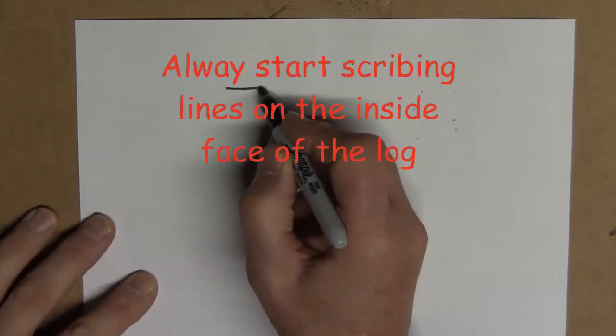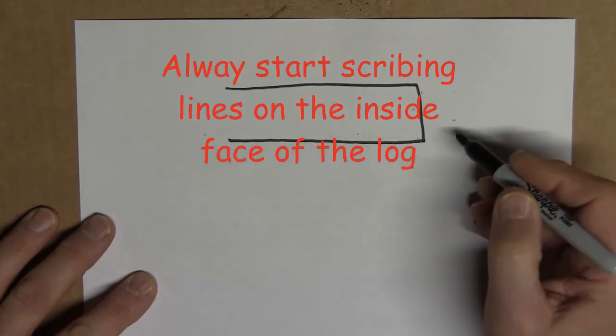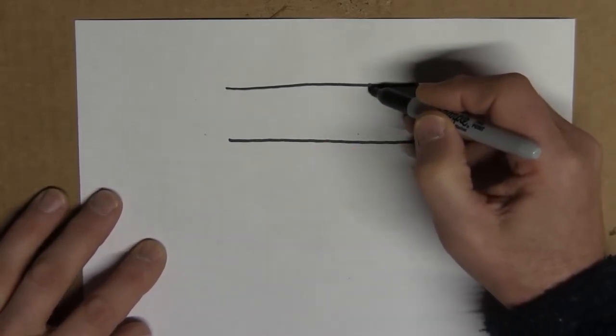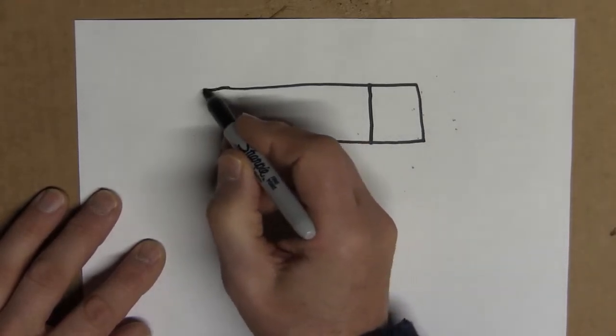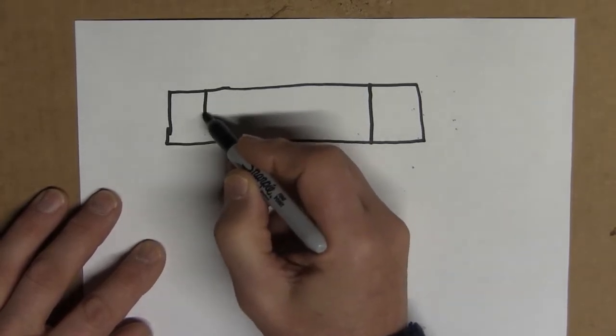Let's talk about how you scribe the lines for your half dovetail notch. You have a log end and you have determined your shoulders for the inside log wall and marked those on your log. Let's say you have another end down here, and you've marked that shoulder as well.